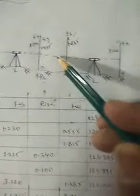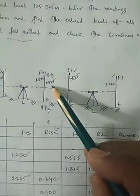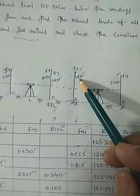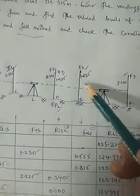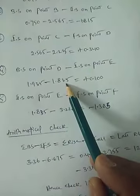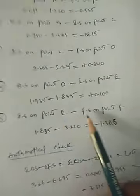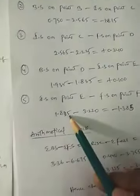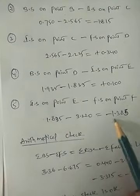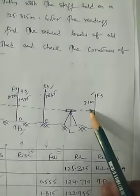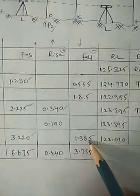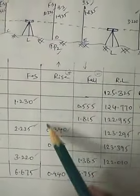Finally, IS on point E minus FS on point F = 1.835 − 3.220 = −1.385, so fall is 1.385. We now have all the rise and fall readings for the table.